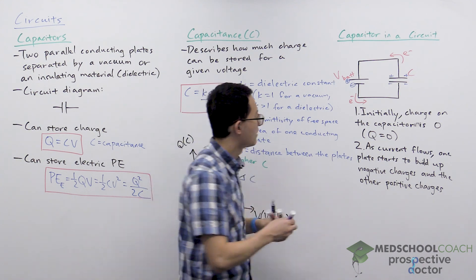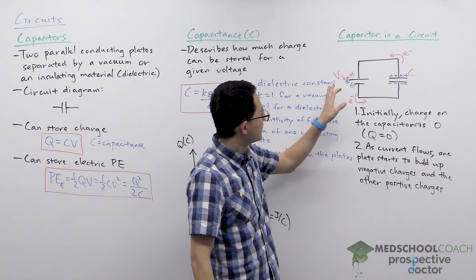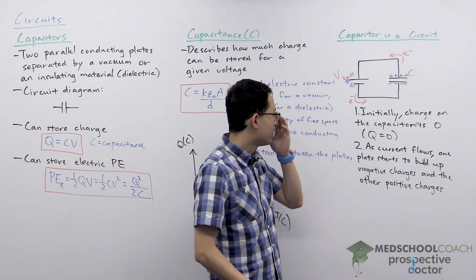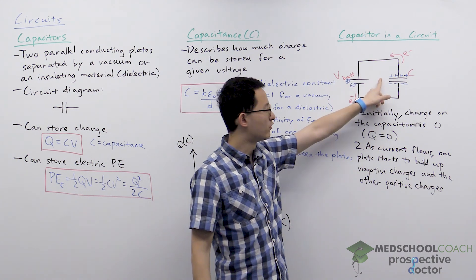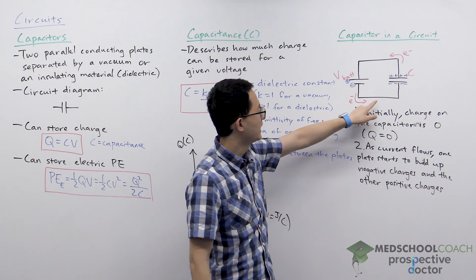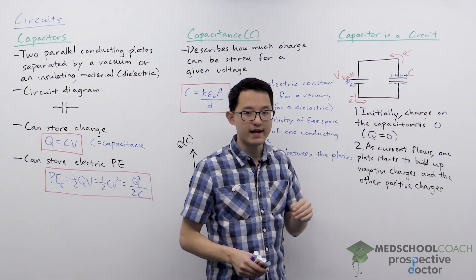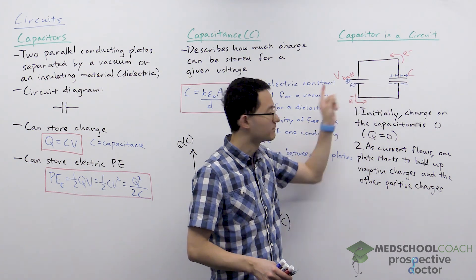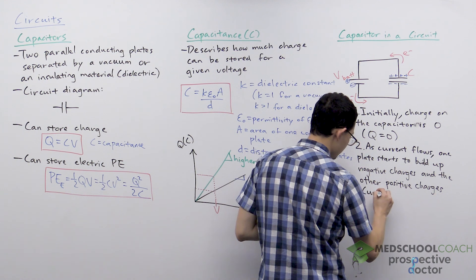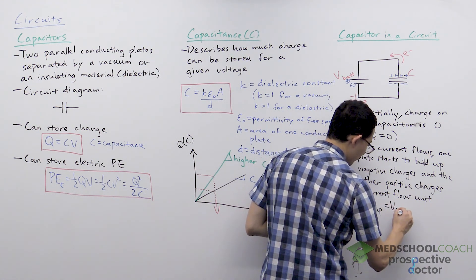This process continues — more negative charge builds up on one plate and more positive charge on the other. However, this does not go on forever. As charge builds up on the capacitor, the capacitor develops its own voltage. The voltage of the battery is in the opposite direction to the voltage of the capacitor, so at some point, when enough charge has built up, the capacitor has the same voltage as the battery and current stops. Current flows until the voltage of the capacitor becomes equal to the voltage of the battery.